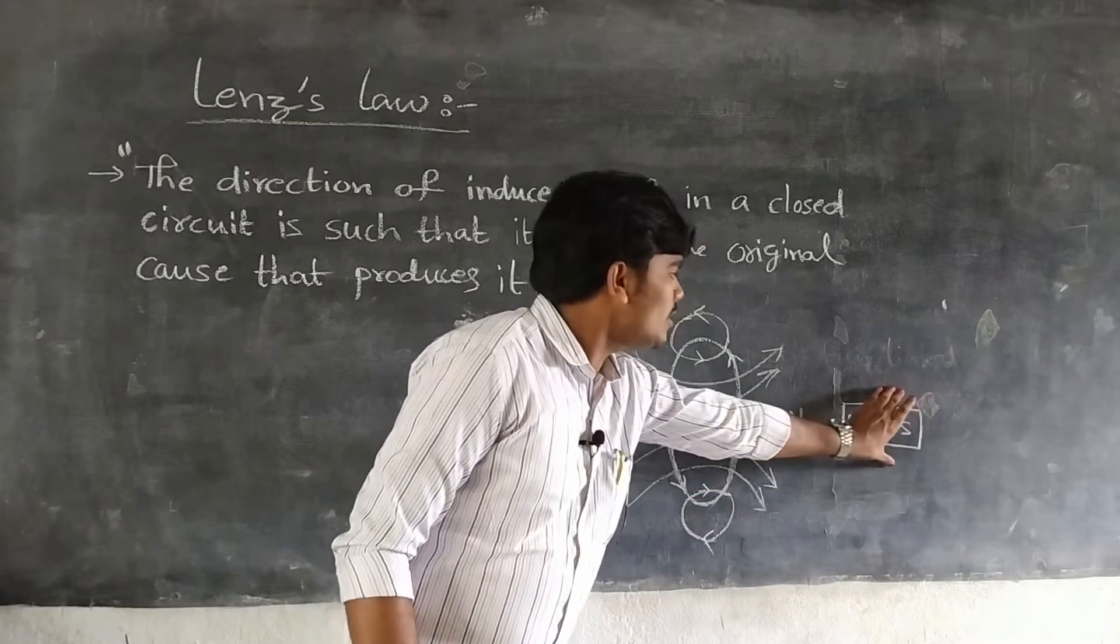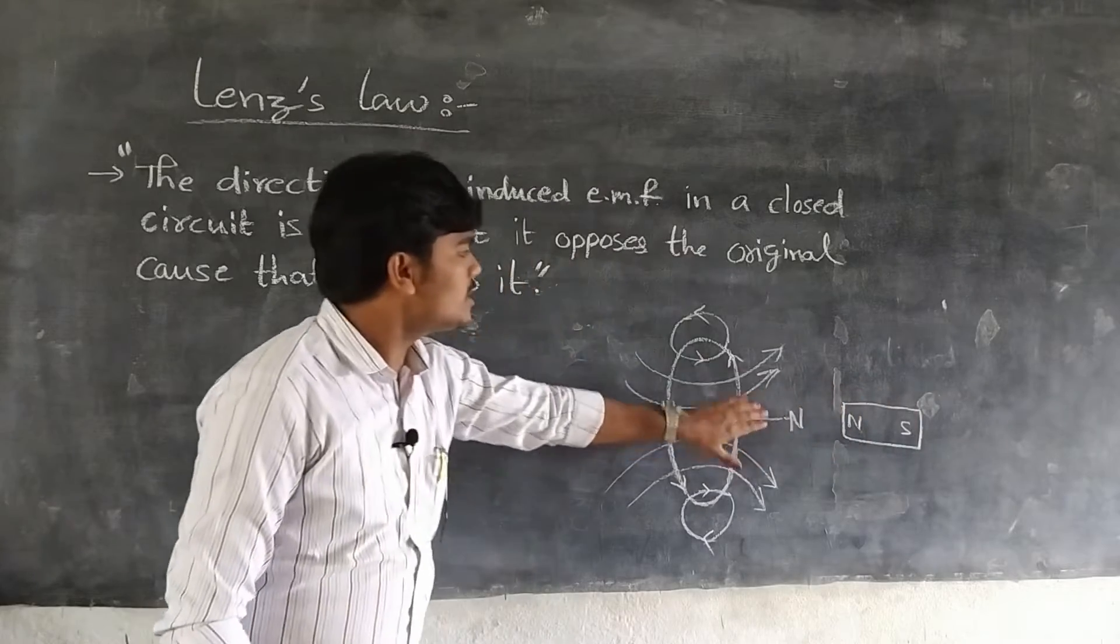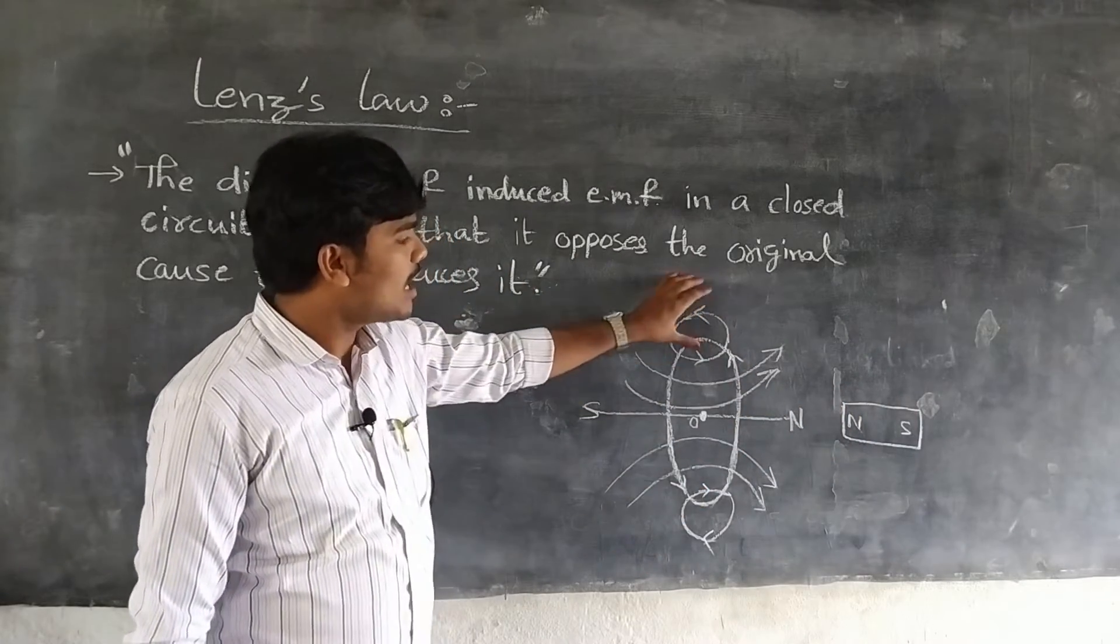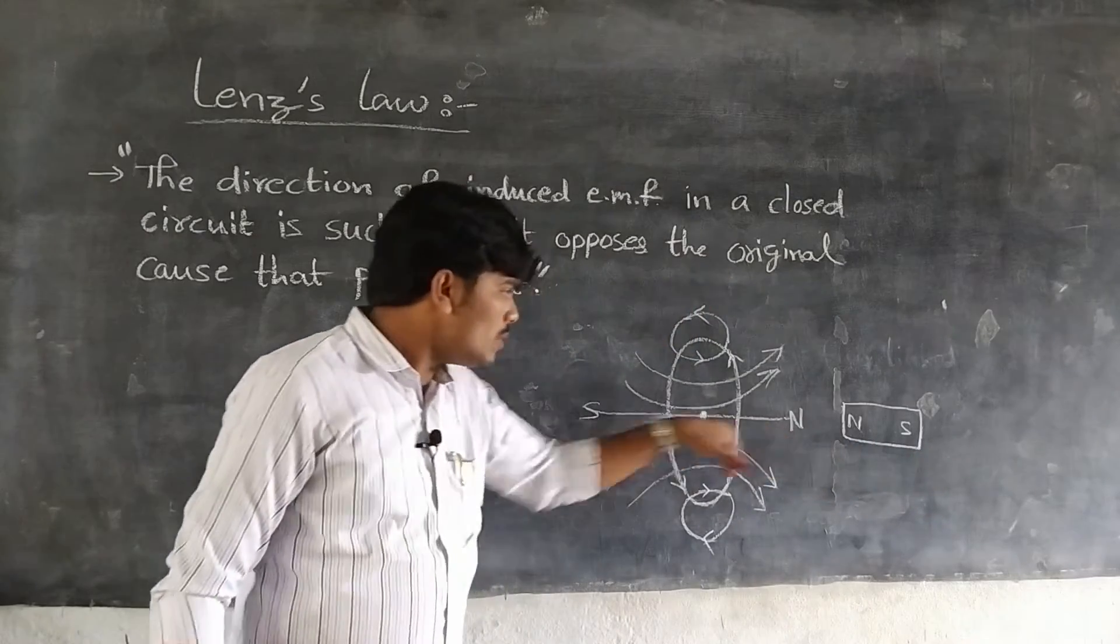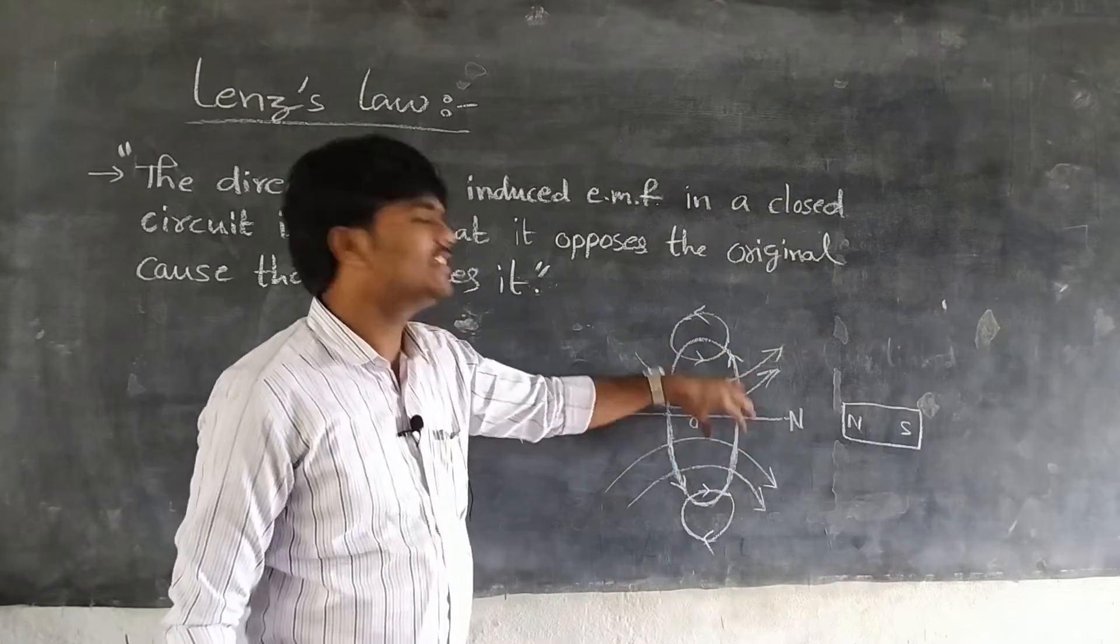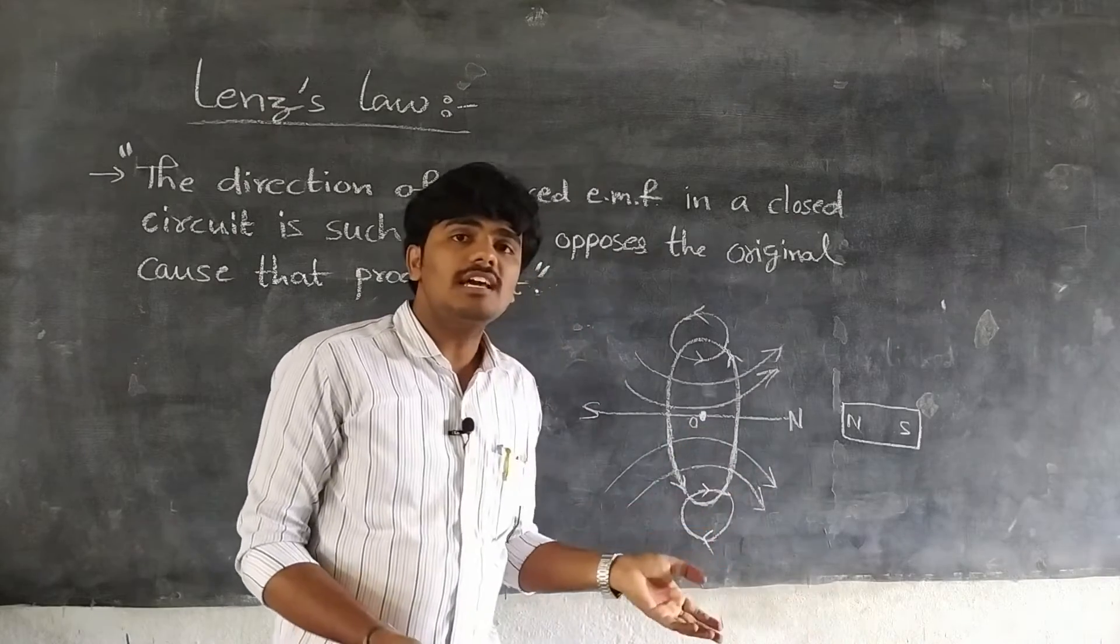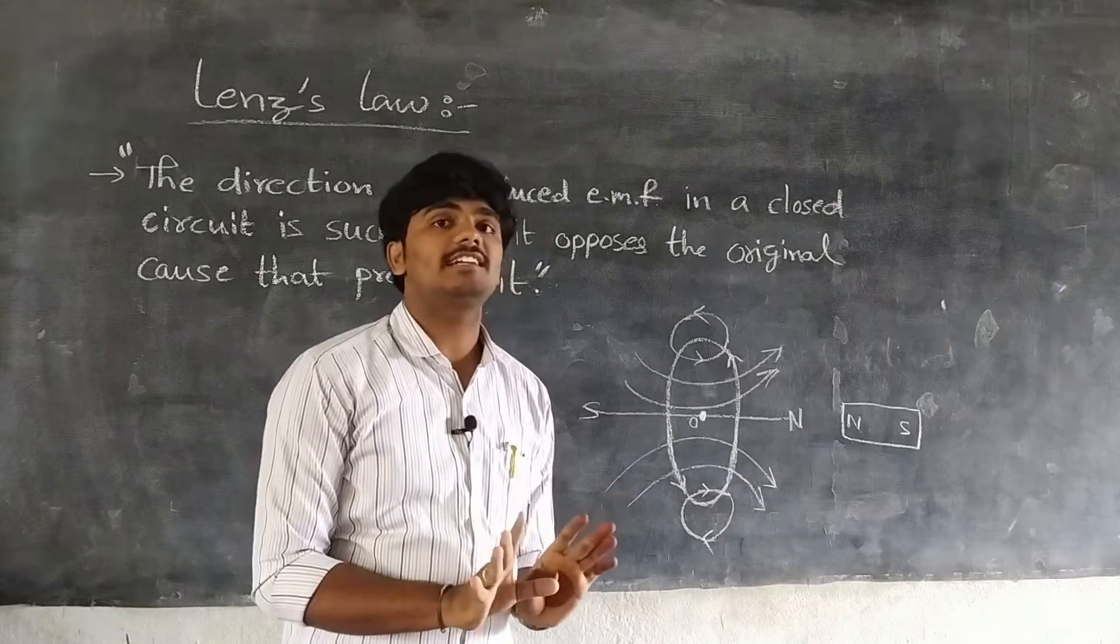Suppose the north pole of a magnet is moved towards the coil connected to a galvanometer as shown in the figure. As the magnet is pushed towards the circuit, an induced current is produced within the coil.